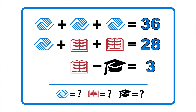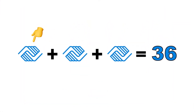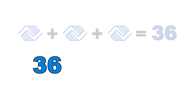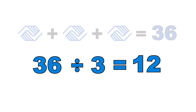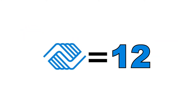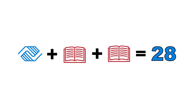Today we're gonna do logic puzzles and put your brains to the test. We'll start with a pretty straightforward one. In the top row, we've got hands plus hands plus hands equals 36. If the hands are all the same, all we have to do is take 36 and divide it by 3. What three equal numbers add up to 36? A quick division problem tells you the answer is 12. So hands equals 12.